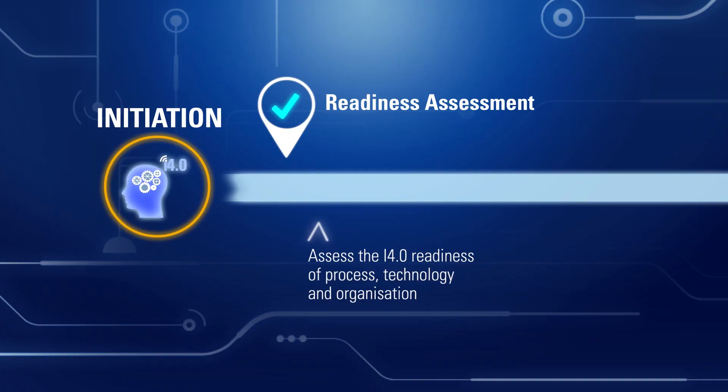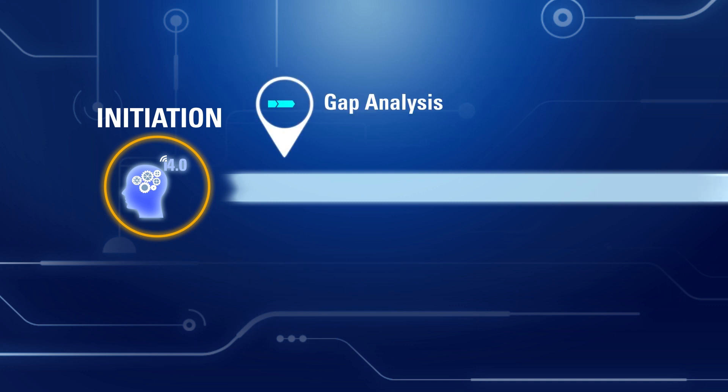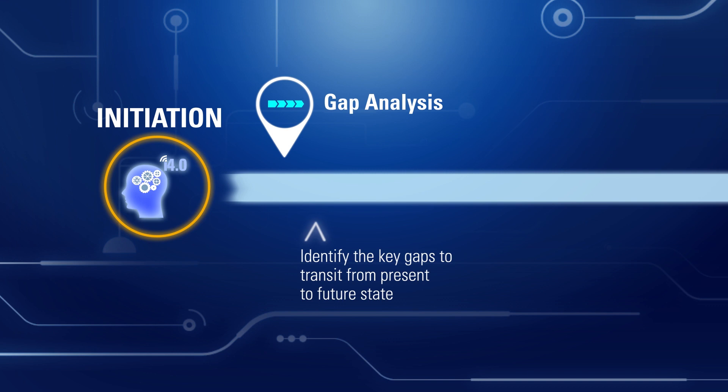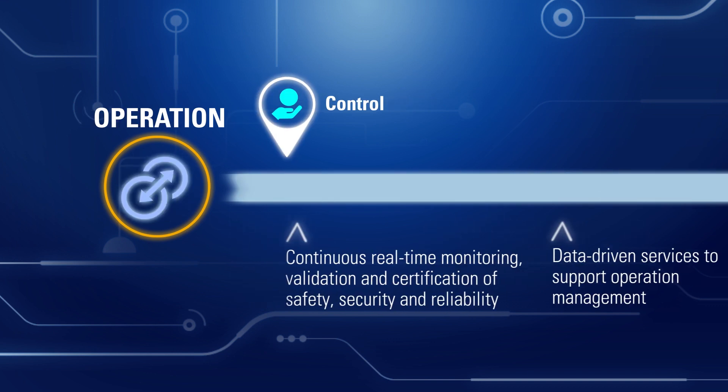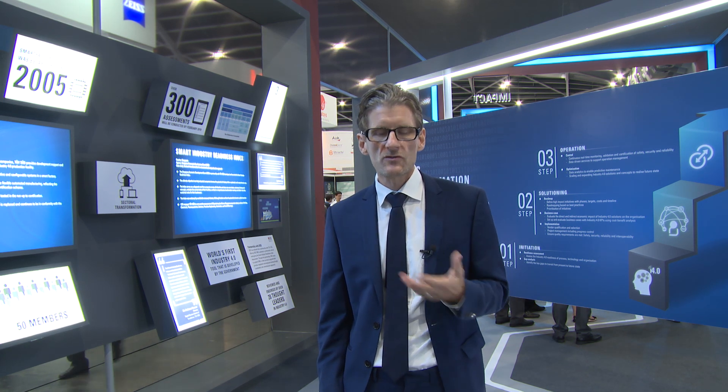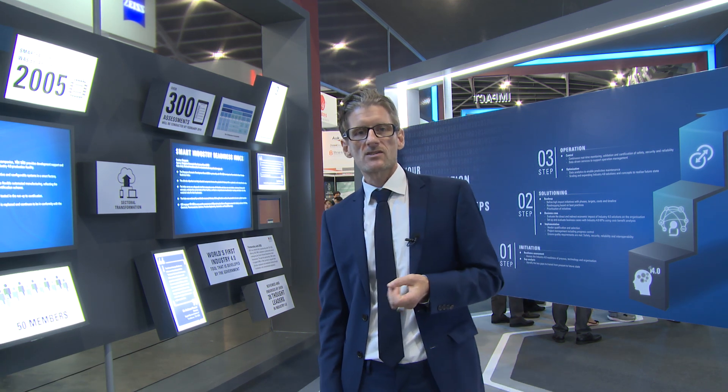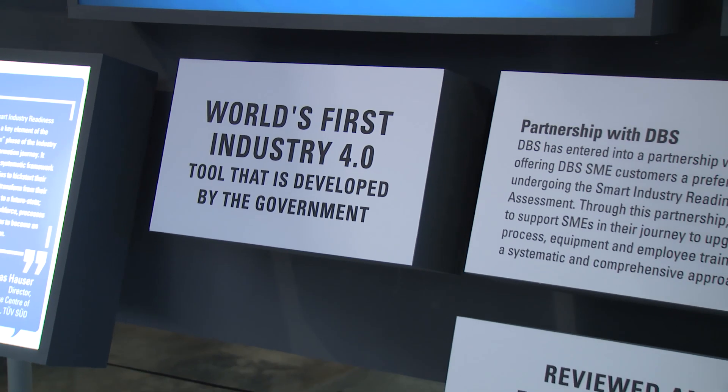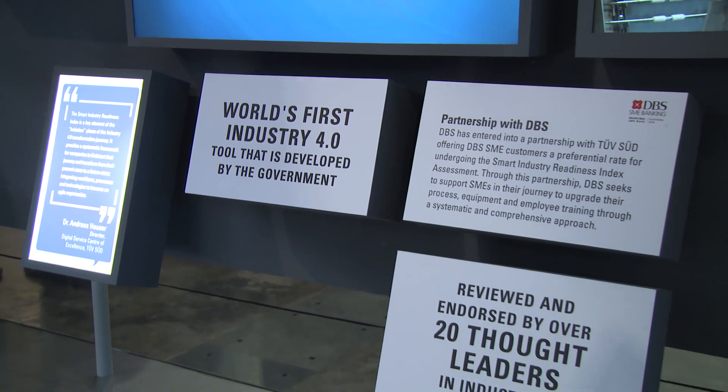So we are here now in Zone 4, the Transformation Zone. It's about how to start the Industry 4.0 transformation journey. We've heard many concepts, solutions, ideas, and visions — but how do you really start your transformation journey? We see on this wall that it always starts with the initiation: a proper baseline of your current situation, a gap analysis, then finding the right solution for your specific problems, and then up to operations. One key tool in the initiation phase is the Smart Industry Readiness Index, developed by the Economic Development Board of Singapore and TÜVSU together. We have already assessed 200 companies with this tool and it really helps companies to initiate, scale, and sustain their transformation journey.